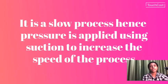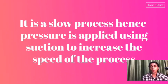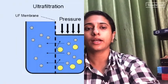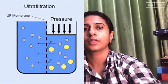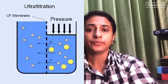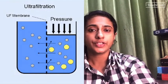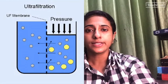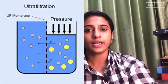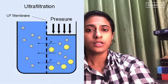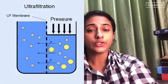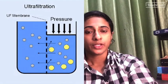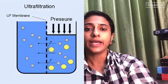This ultra-filtration process is also very slow. To speed it up, we apply pressure or suction to increase the filtration rate. The ultra-filter paper separates the apparatus into two compartments — on one side is the colloidal solution under pressure, and on the other side the solvent molecules with electrolytes pass through, giving us the purified colloidal solution.